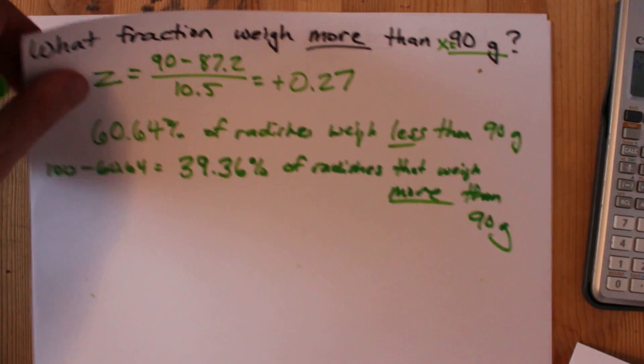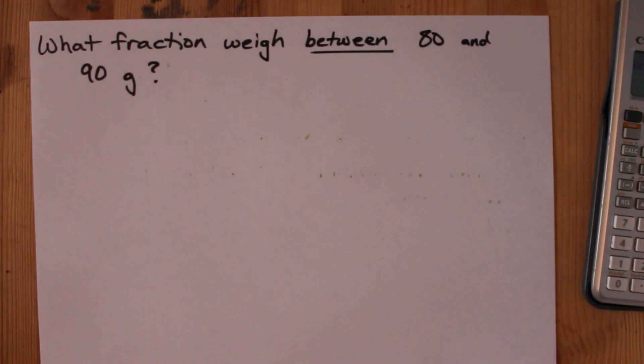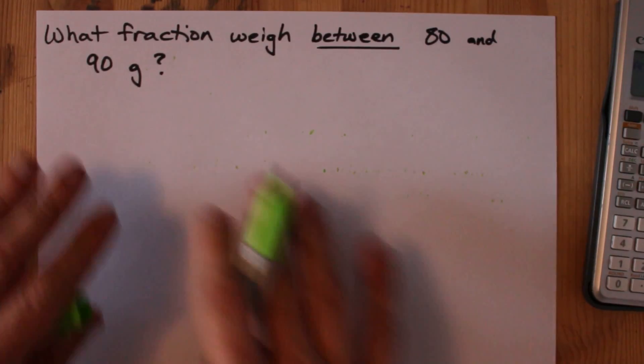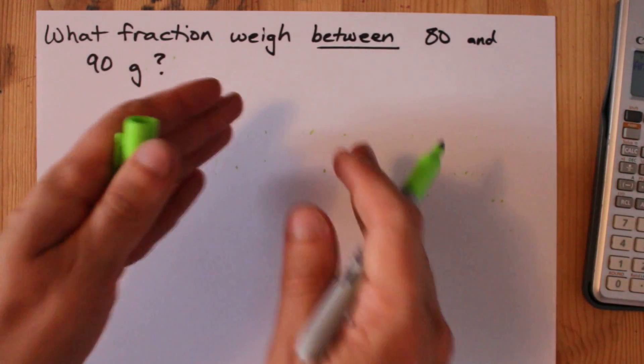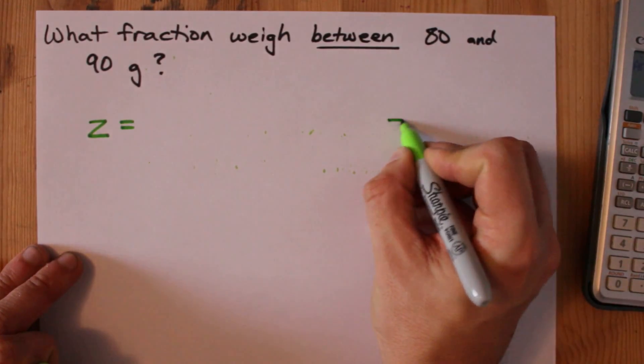The final question here is what fraction weigh between 80 and 90. If you're asked for what fraction are between two thresholds, you'll usually have to calculate a z for both.